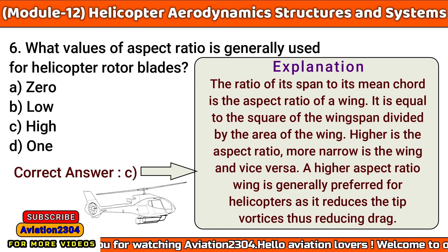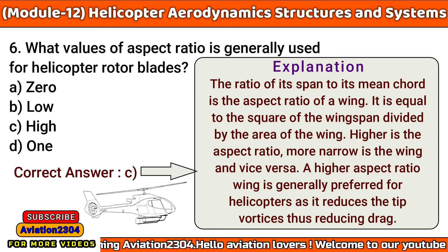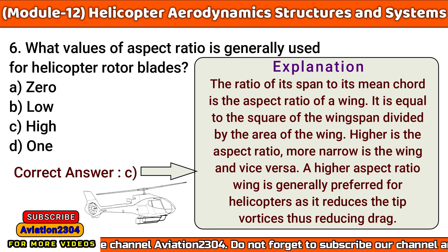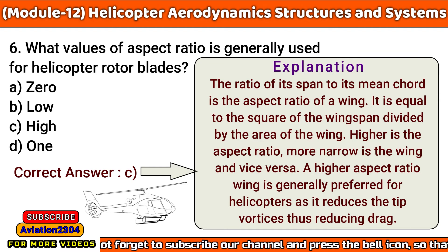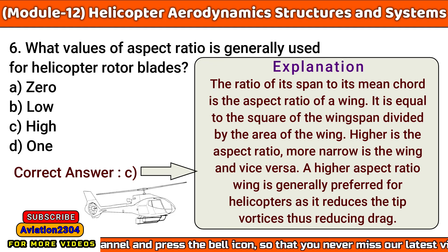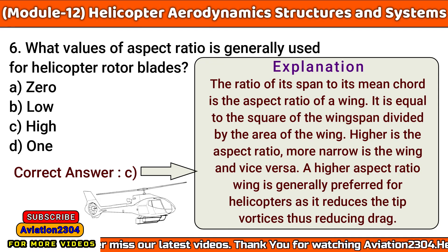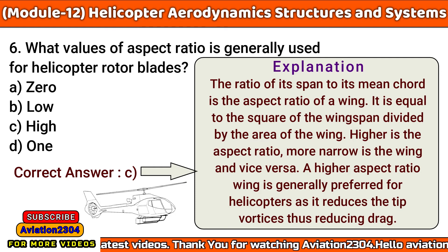What values of aspect ratio are generally used for helicopter rotor blades? A. Zero, B. Low, C. High, D. One. The correct answer is C. The aspect ratio of a wing is the ratio of its span to its mean chord, equal to the square of the wingspan divided by the area of the wing. A higher aspect ratio means a narrower wing. A higher aspect ratio wing is generally preferred for helicopters as it reduces tip vortices, thus reducing drag.